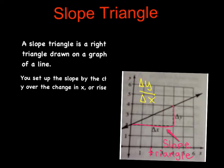A slope triangle is a right triangle drawn on a graph of a line. You set up the slope by the change in y over the change in x, or rise over run.